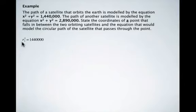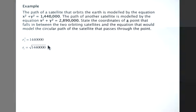If we look at the first satellite and call this R1 squared, it's 1,480,000. So R1 is just the square root of this. Taking the square root on the calculator, we get that R1 is 1,200.